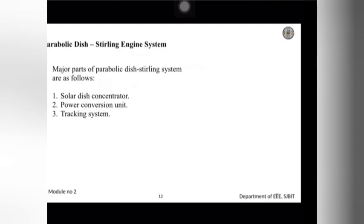Next, we have this parabolic dish or Stirling engine system. The major parts of this system are three: one is radiation collection from the solar dish concentrators, we have a power conversion unit which can convert power individually or collectively if there are more panels. Simultaneously we have a tracking system, whether double axis or single axis, based on your computer where it can track simultaneously. These are the three main parts of this system.